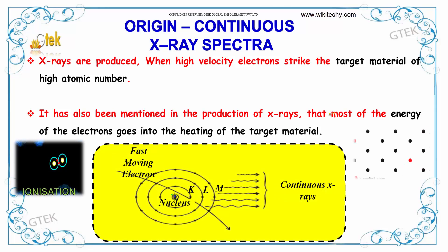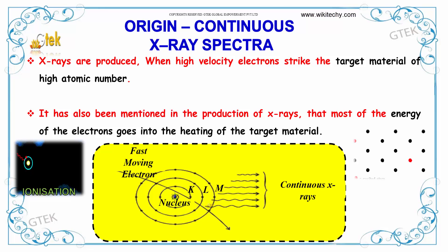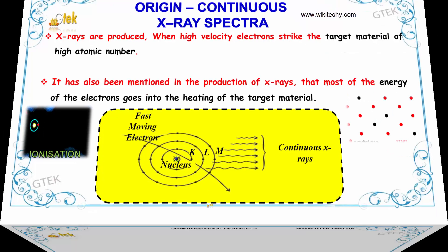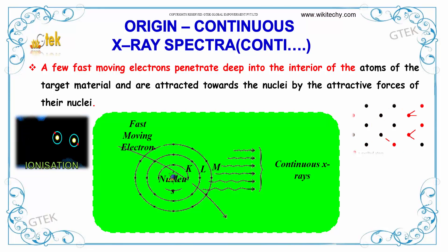X-rays are produced when high velocity electrons strike the target material of high atomic number. Most of the energy of the electrons goes into heating the target material. A few fast-moving electrons penetrate into the interior of the atoms of the target material and are attracted towards the nuclei by the attractive force of the nuclei.